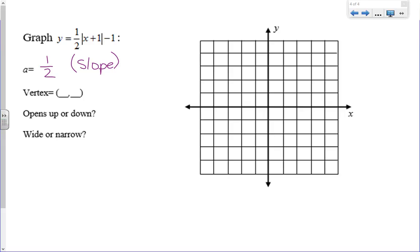I have to take the opposite of what's in there with x, and so because it's a positive 1, my h value is going to be negative 1. And I'm subtracting 1 here for my k, so that just stays minus 1. The a value is positive, so it's going to open up. And 1 half is less than 1, so this is going to be a wide graph.